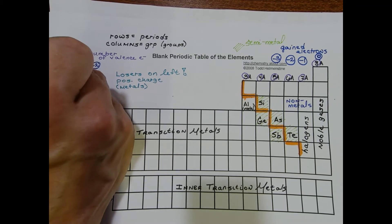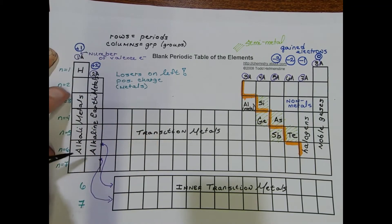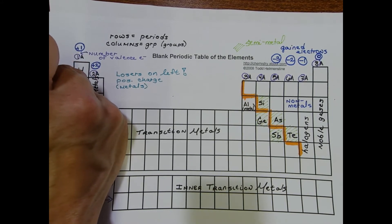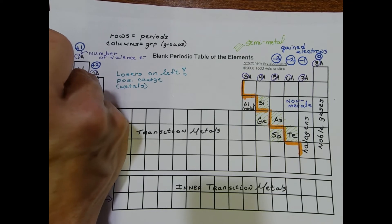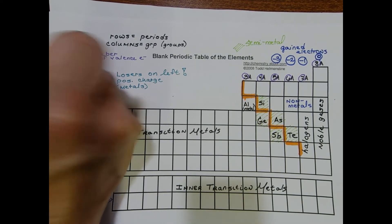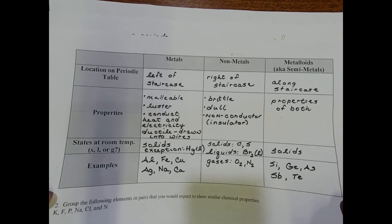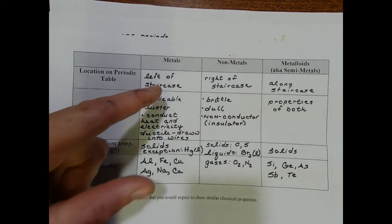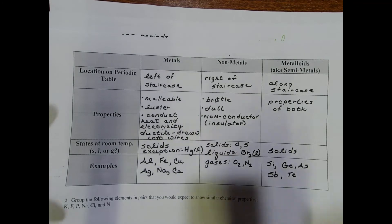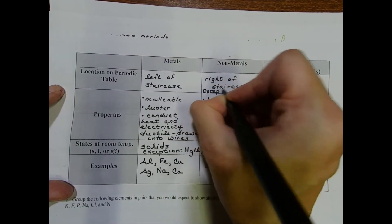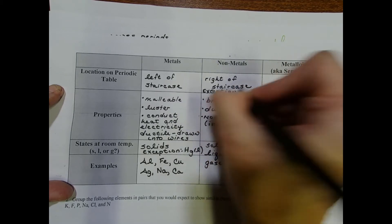Hydrogen with an atomic number of one is all the way on the left hand side of the periodic table. However, it is a non-metal. Even though it's all the way on the left, maybe we can say our non-metals are to the right of the staircase and we do have an exception there, and that's going to be hydrogen gas.